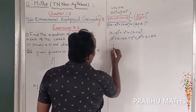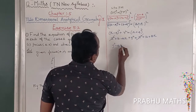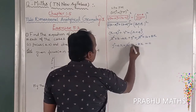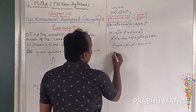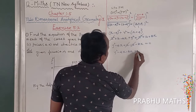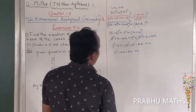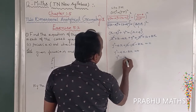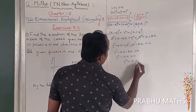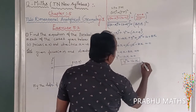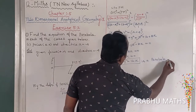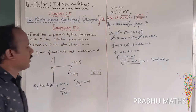Moving terms to one side: y² - 8x - 8x = 0, giving y² - 16x = 0, therefore y² = 16x. This is the equation of the parabola.